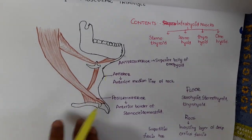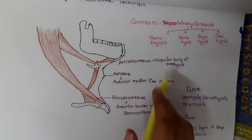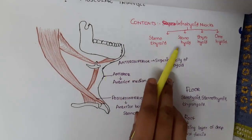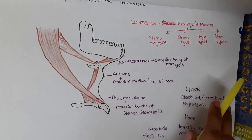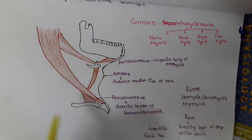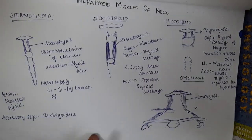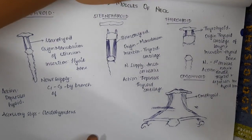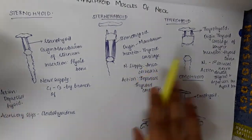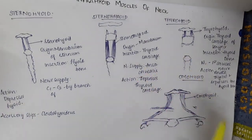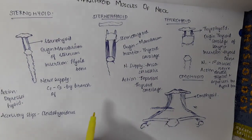What are the infrahyoid muscles? The infrahyoid muscles include sternothyroid, sternohyoid, thyrohyoid, and omohyoid.